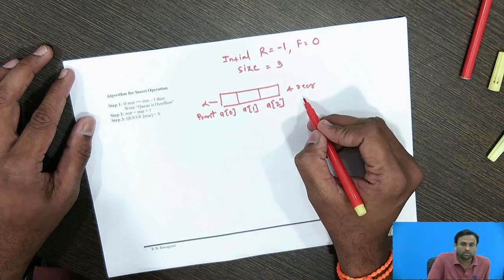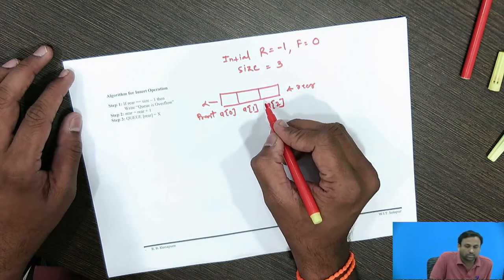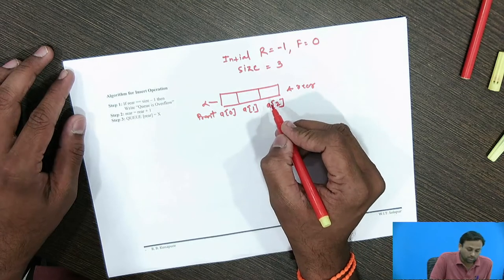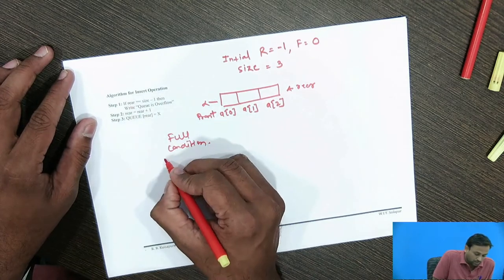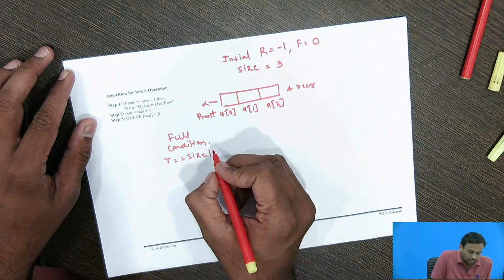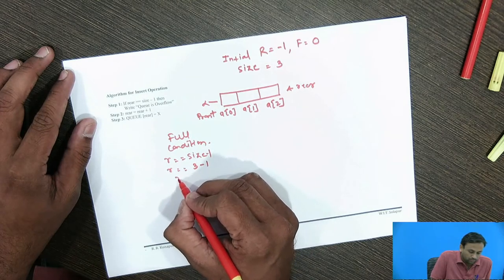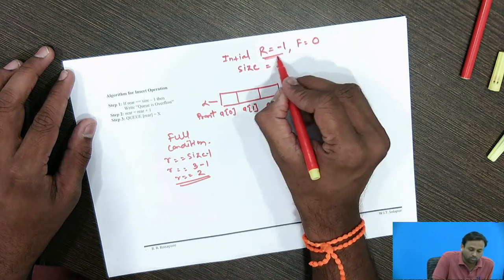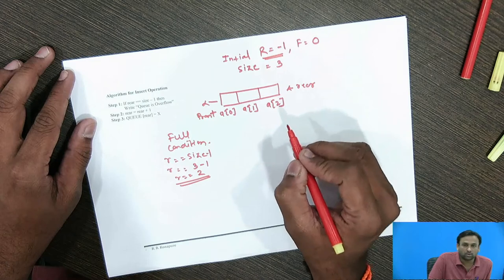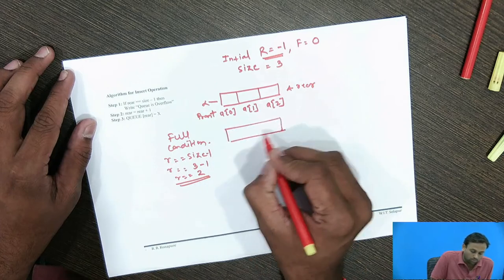Whenever we delete elements from the queue, we delete from the front end. Before inserting data, every time we have to check the full condition: rear == size - 1. Since size is 3, that means rear == 2. Currently rear is equal to minus 1, so that condition is not satisfied, meaning we can insert a new element into the queue.